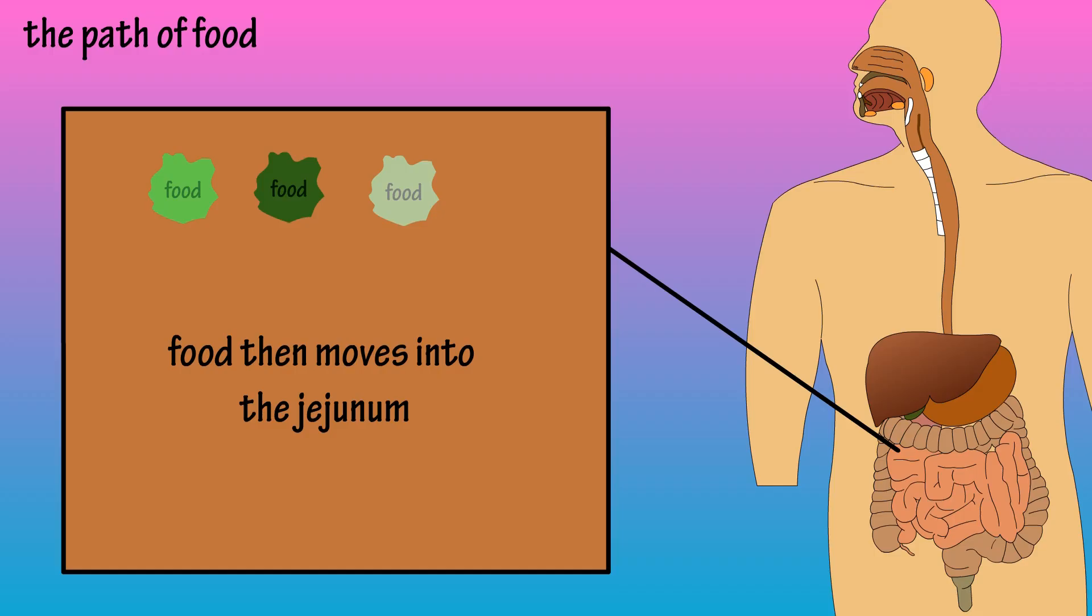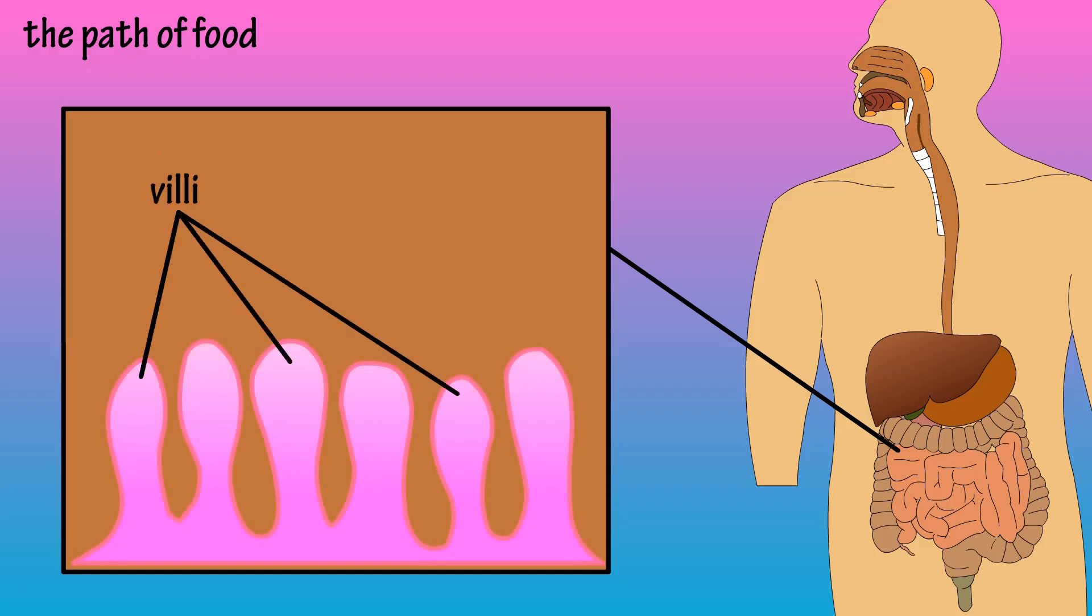And folks, this is where the magic happens. The inner lining of the small intestine is covered by tiny finger-like projections called villi. These villi give the small intestine a huge surface area to allow for efficient absorption of nutrients.